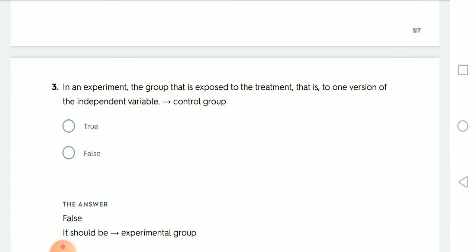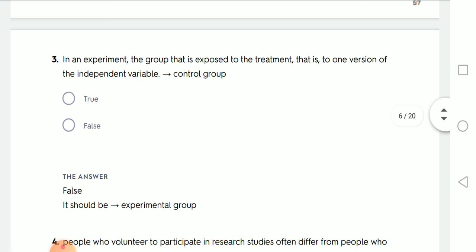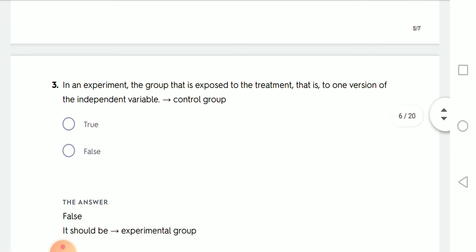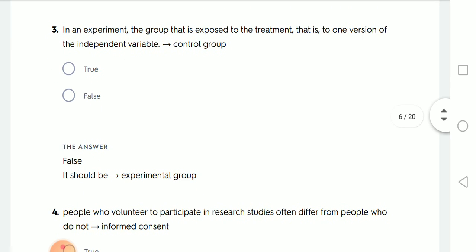As in an experiment, the group that's exposed really to the treatment is called what? Control? That is exposed to the treatment, here the question is, is it called control group? No, of course not. They are called what? Experimental group.